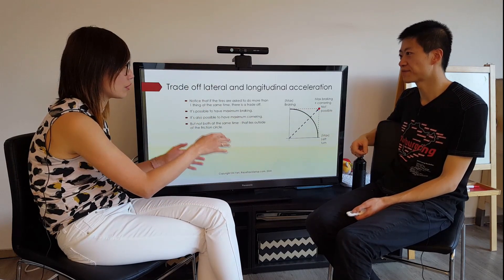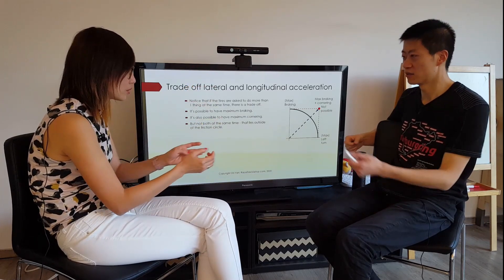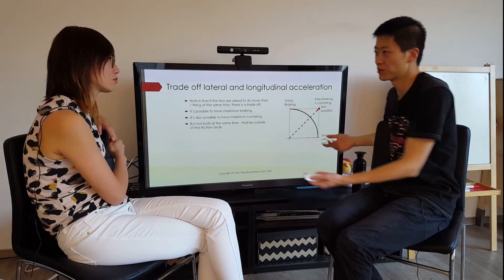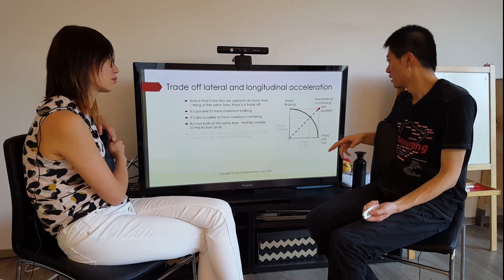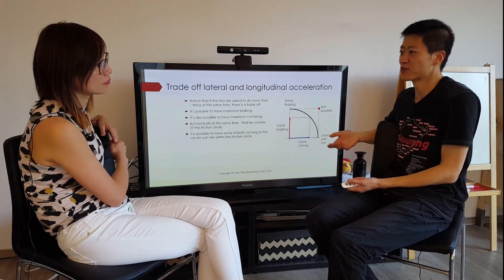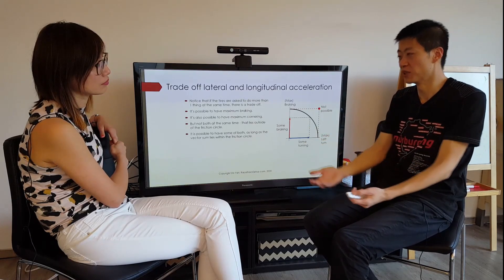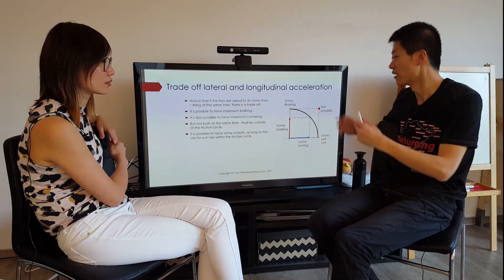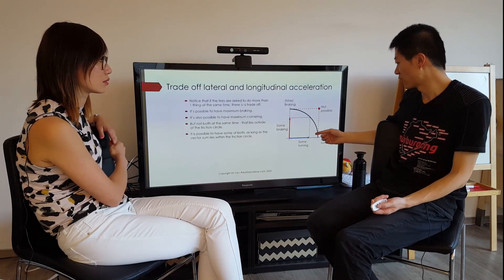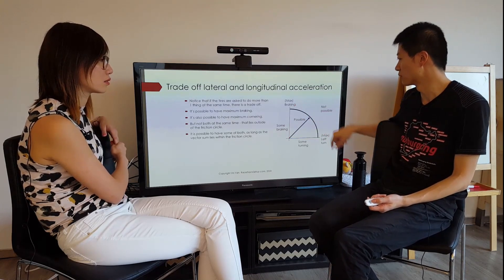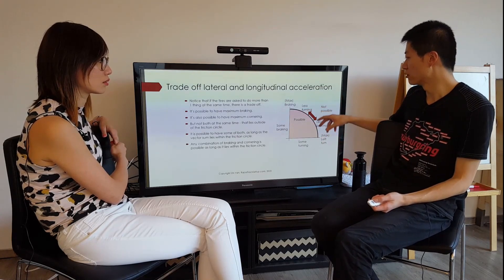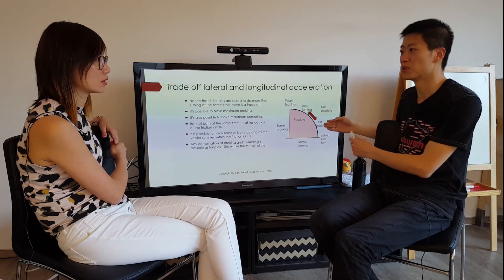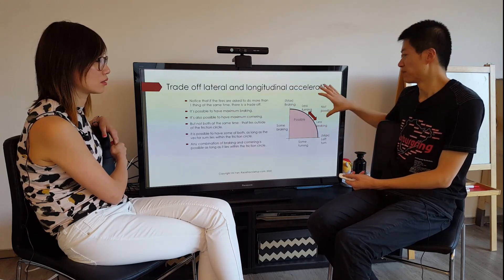You can have a bit of both, but you cannot have the maximum of both. It's not a square because the tire can only do so much — the capability of the tire to generate grip is limited. So you have to choose: do you want to accelerate or brake, or do you want to corner? You can have a little bit of both within the friction circle, but if you do a bit more braking or accelerating, you have to do a bit less turning.